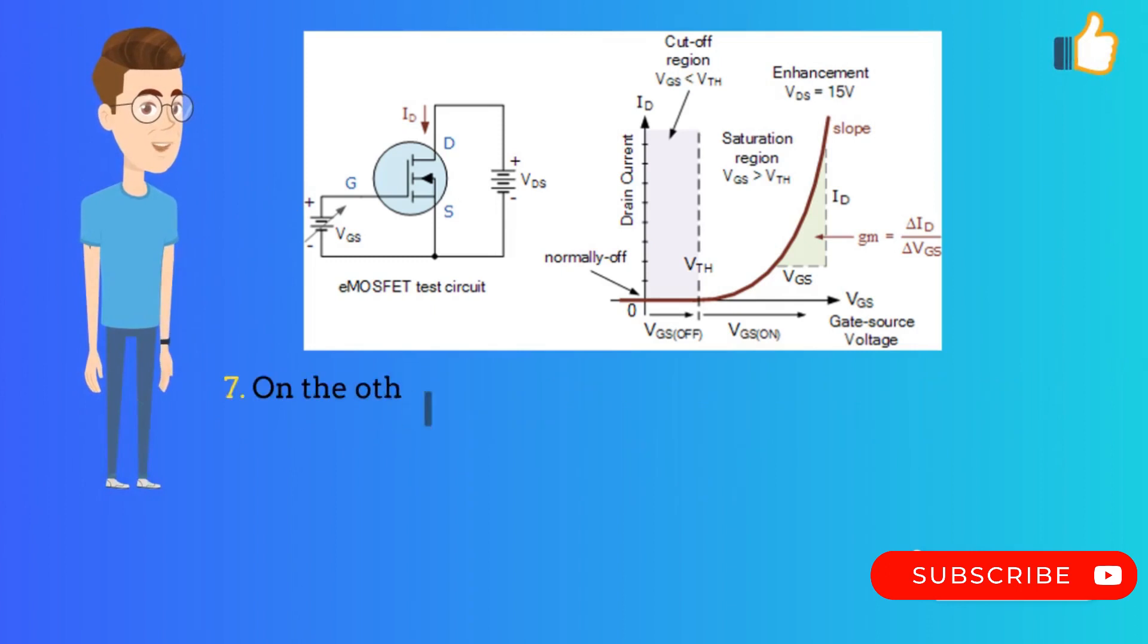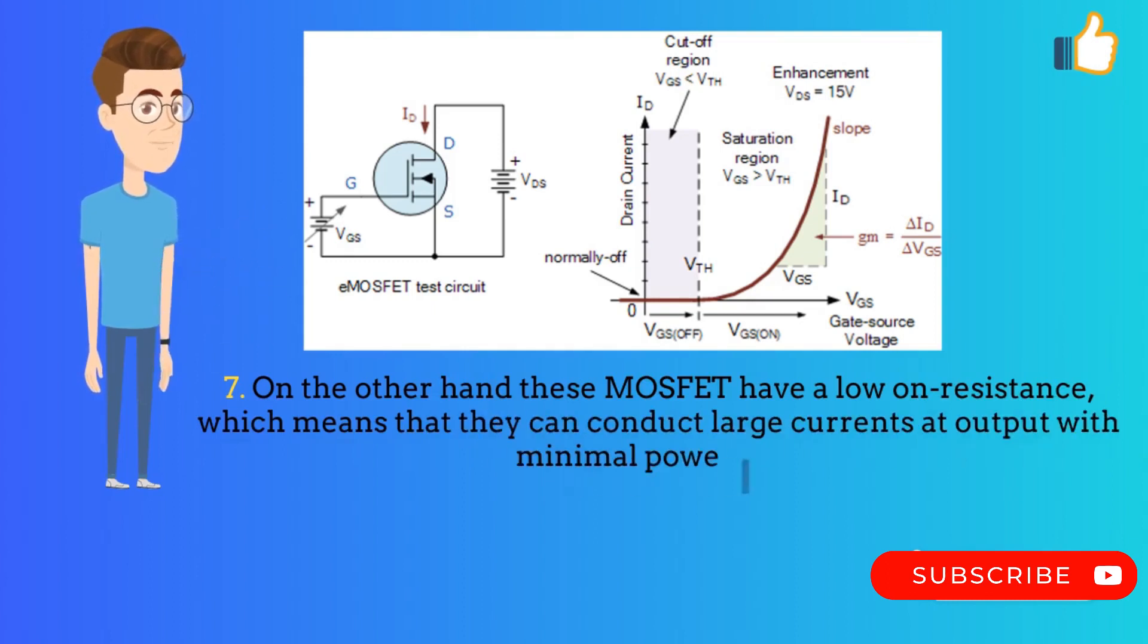On the other hand, MOSFETs have a low on-resistance, which means that they can conduct large currents at output with minimal power loss.